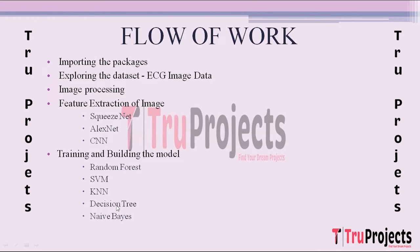The next algorithm used is Decision Tree. Decision Tree is a tree-like structure where each node represents a feature, each branch represents a decision rule, and each leaf node represents a class label. It makes decisions by recursively splitting the dataset based on informative features. Decision Trees are interpretable and can handle both categorical and numerical data, and are particularly useful for capturing non-linear relationships in the data.